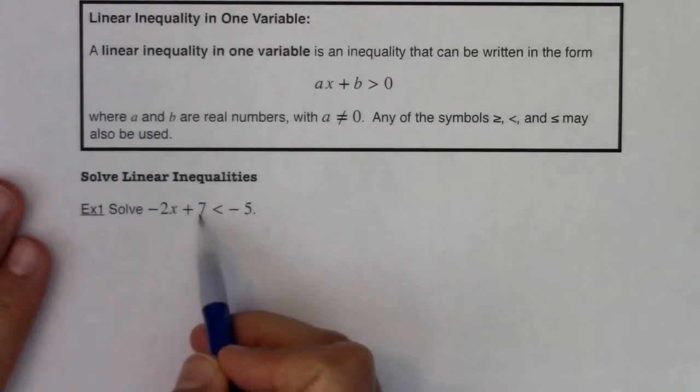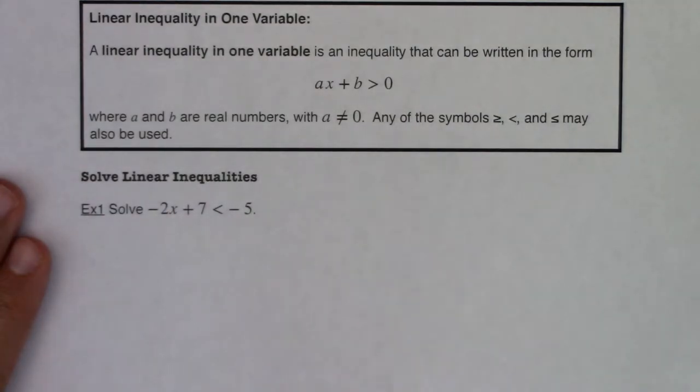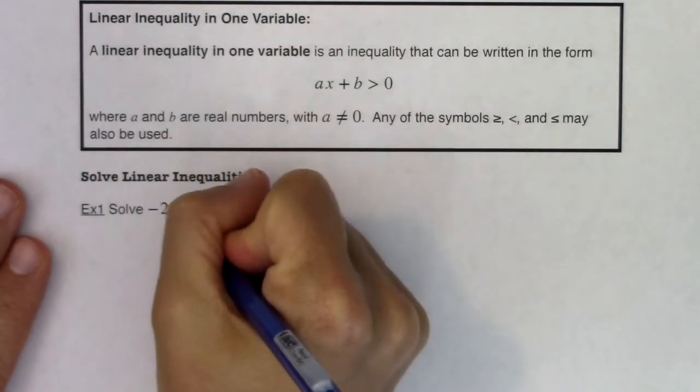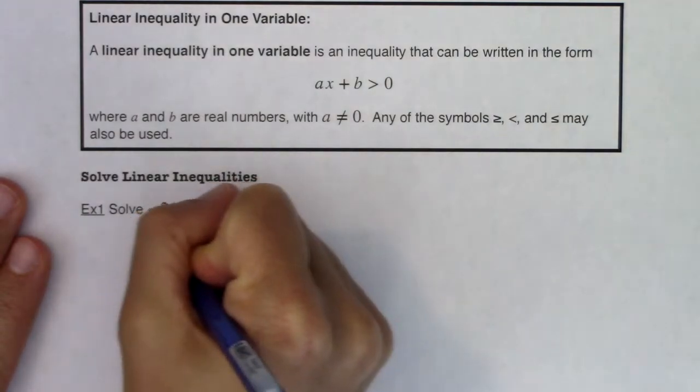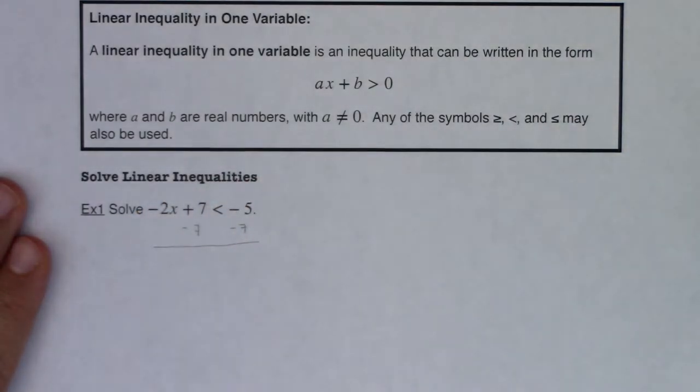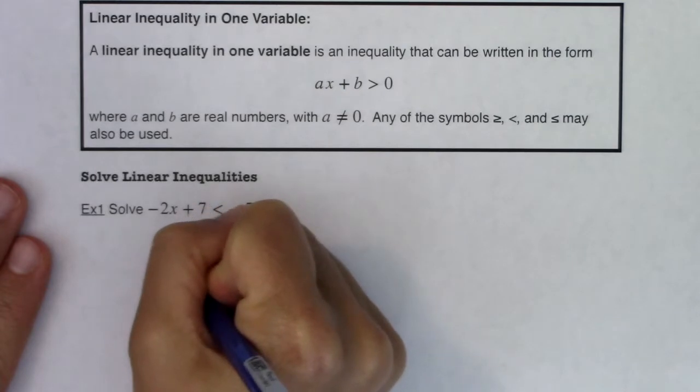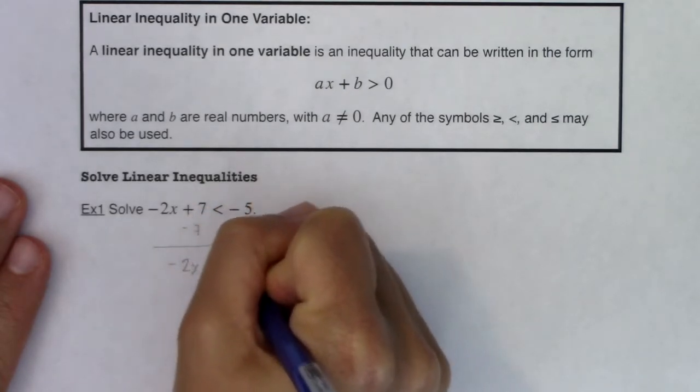Let's say I gave you this inequality. You see I have a less than symbol here. I would still subtract seven from both sides, just like a regular equation, but I'm going to get -2x < -12.